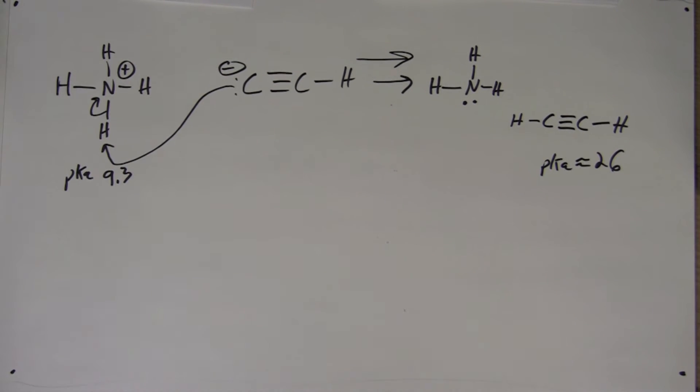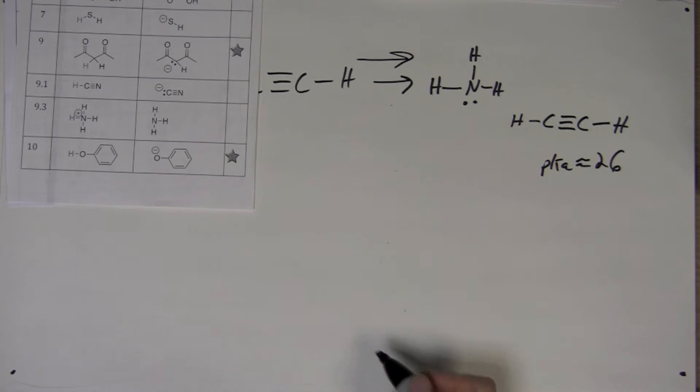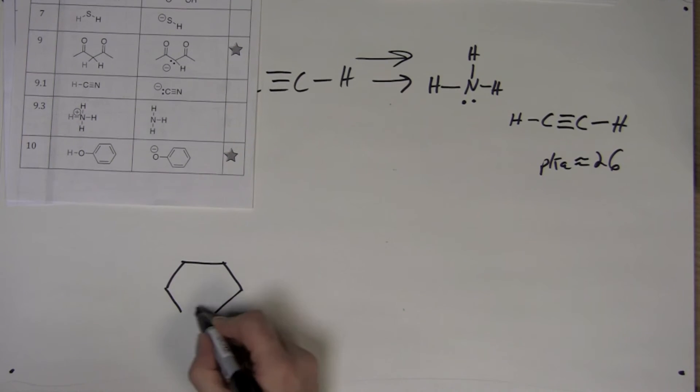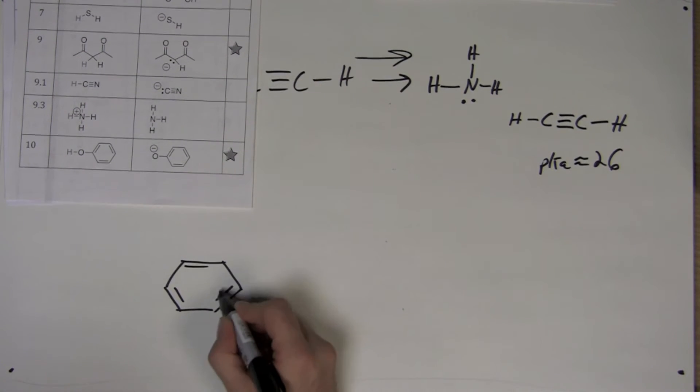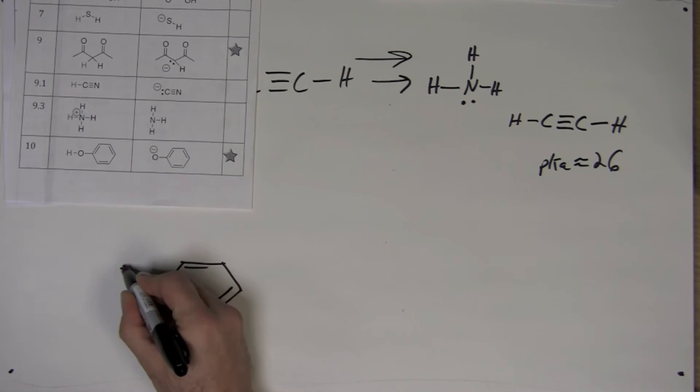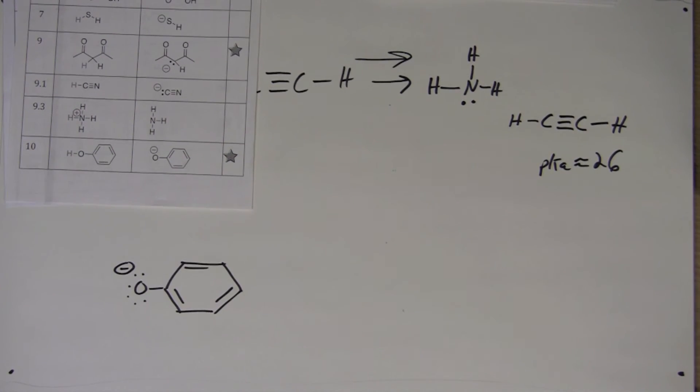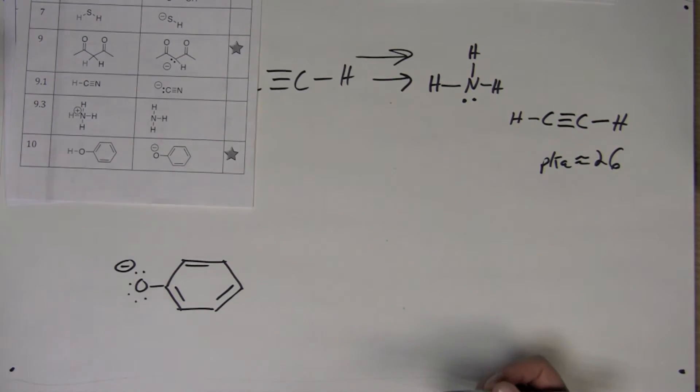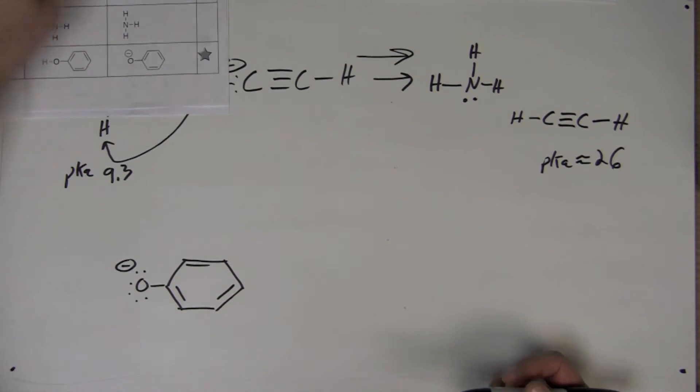Let's try one more. Let's take this conjugate base. Again, we can use this to practice drawing Lewis structures. Notice that the heteroatoms do not have lone electrons drawn. Therefore, you need to figure out how many lone pairs are on the molecule.